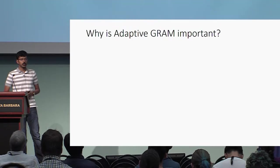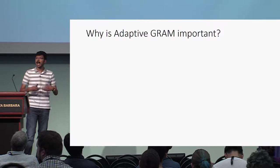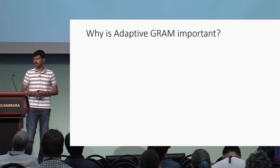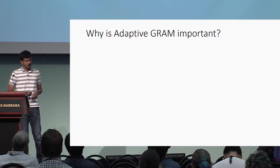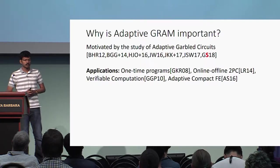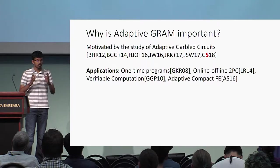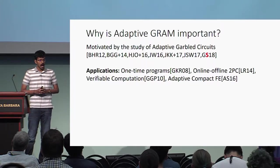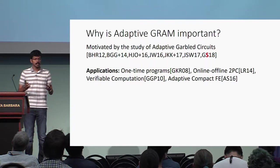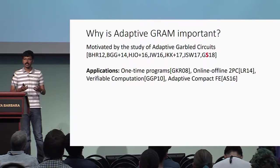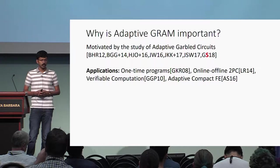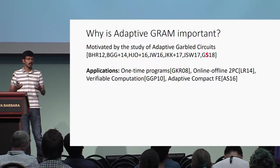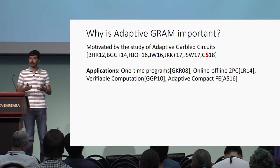A natural question is why is adaptive security important and why do we care about obtaining adaptive garbled RAM from standard assumptions? The main motivation comes from the sequence of works on studying adaptive garbled circuits, which has several interesting applications such as one-time programs, online-offline two-party computation, verifiable computation, and even constructing adaptive compact functional encryption.